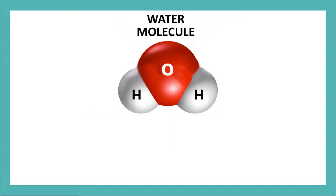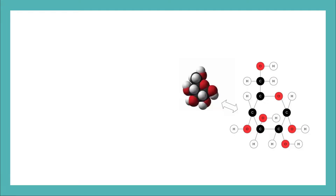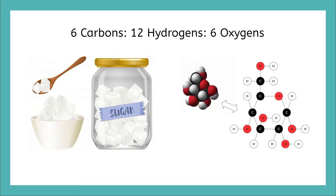When elements create a compound, they always join in a specific ratio. For example, the ratio of liquid water is 2 hydrogens to 1 oxygen. If a compound has a different ratio of hydrogen to oxygen, then it's not water. Glucose, the type of sugar found in your favorite cookie, has a ratio of 6 carbons to 12 hydrogens to 6 oxygens. The compound of glucose will always have this same ratio. Compounds are all around you.